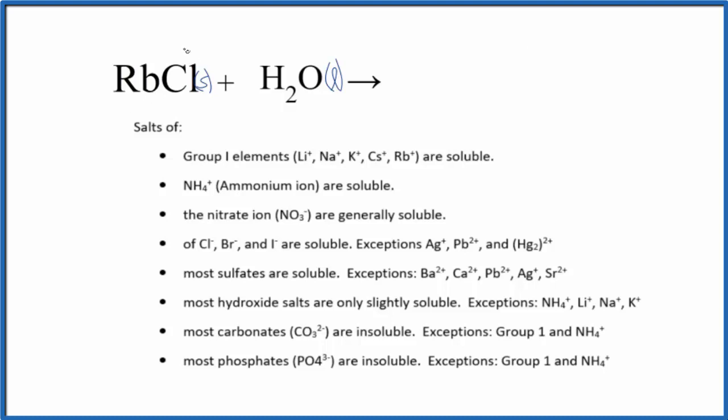Rubidium is a metal and chlorine is a non-metal, so this is an ionic compound and often these are soluble in water, but we should check.